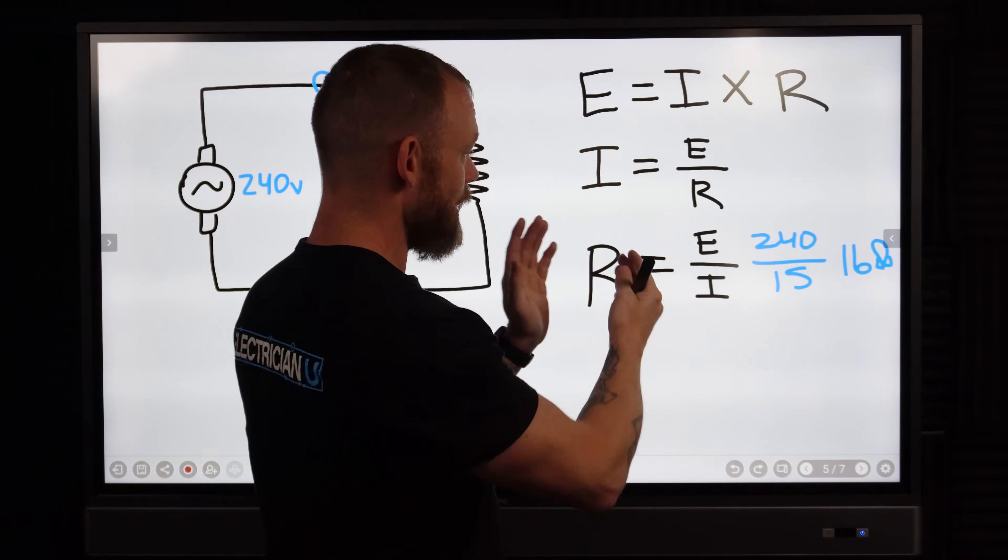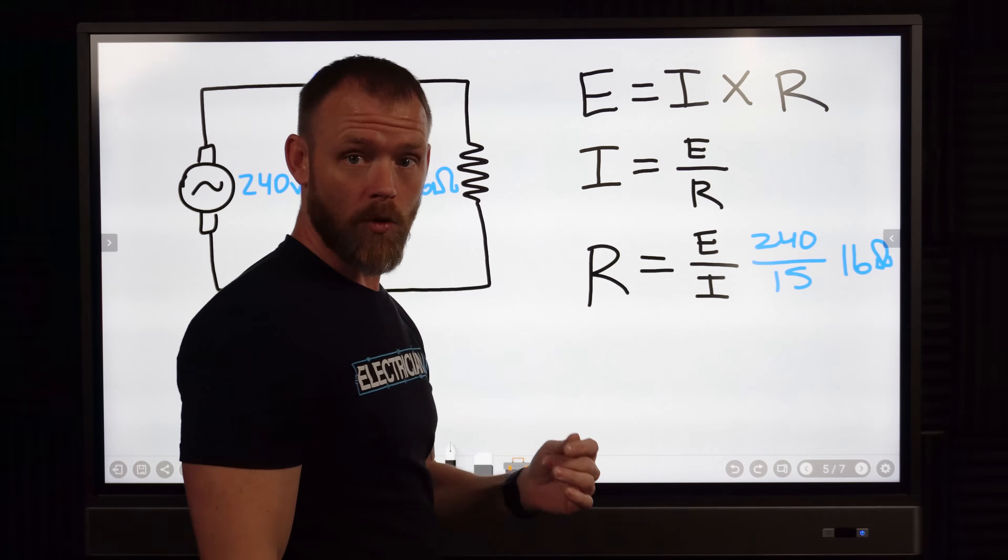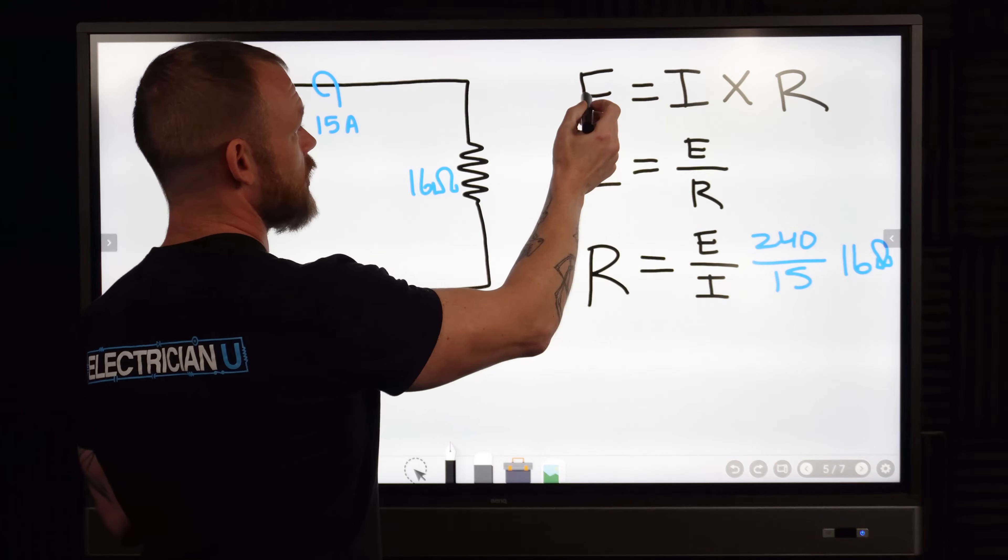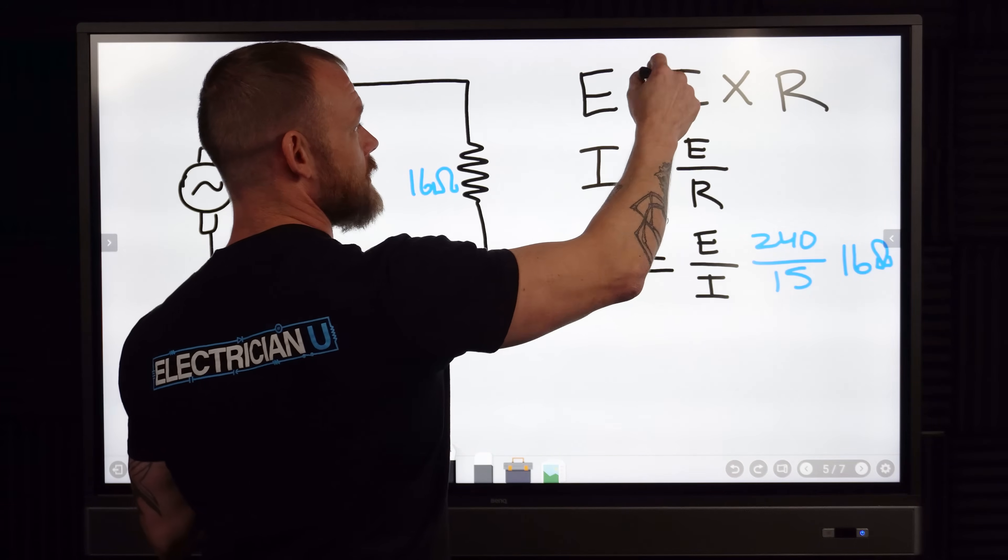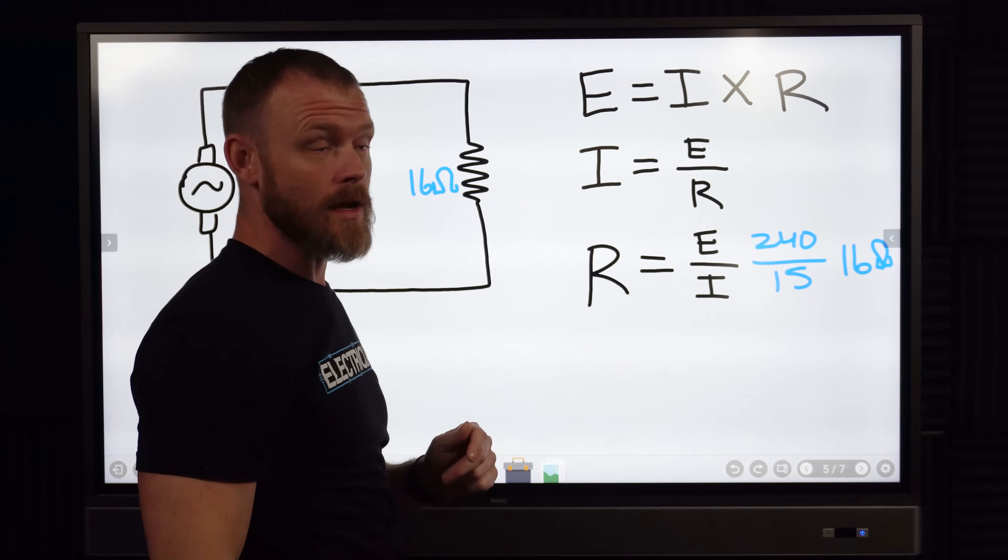Everything else is in a numerator so it is all directly proportional. So if you take the current, if you take the current amperage and the voltage and you increase one, you're going to increase the other.